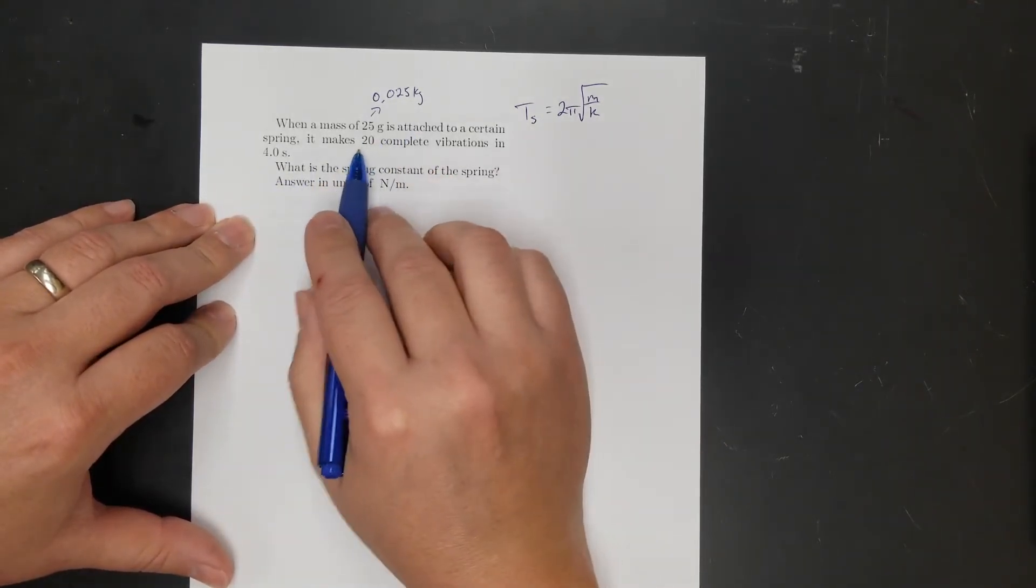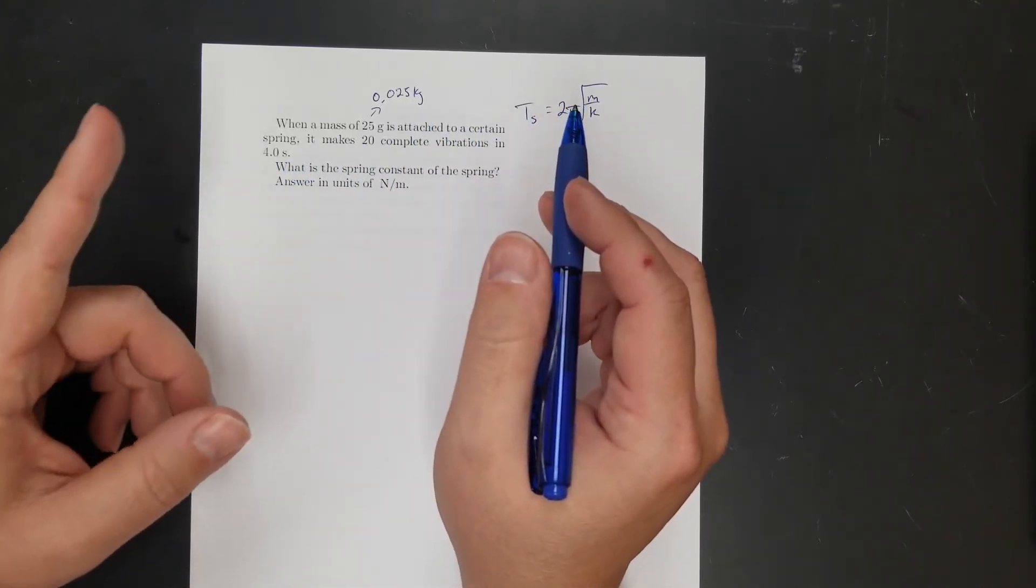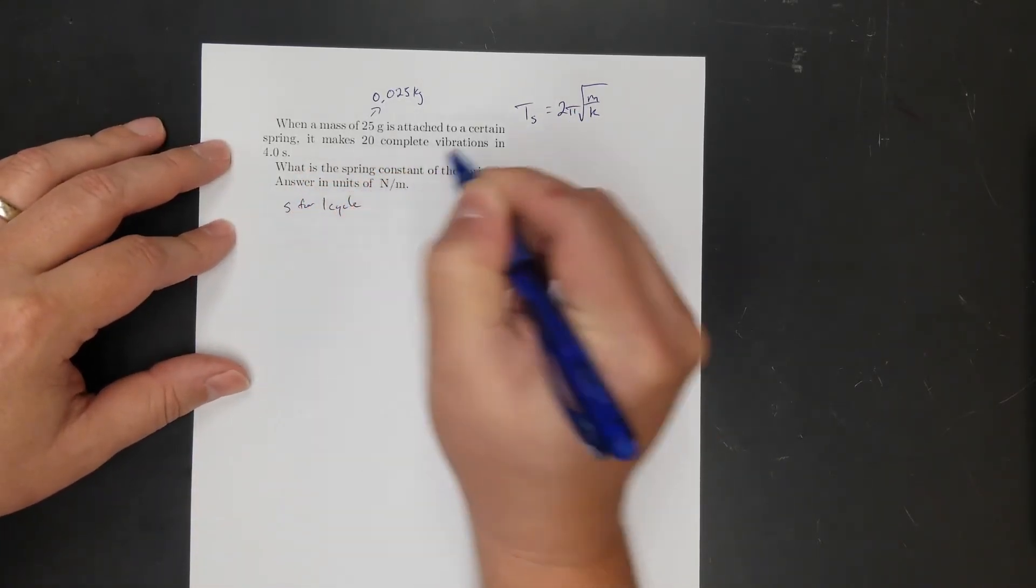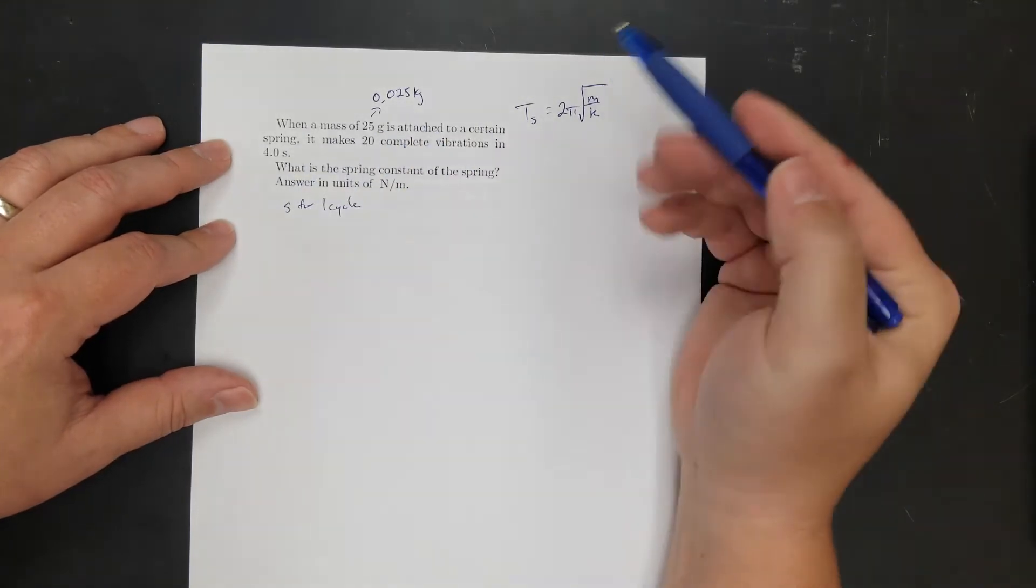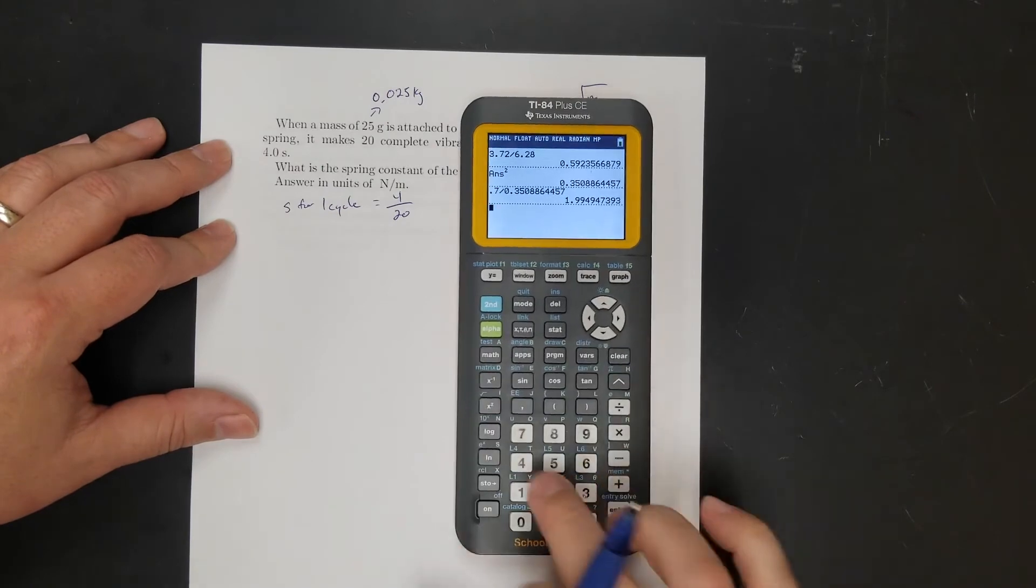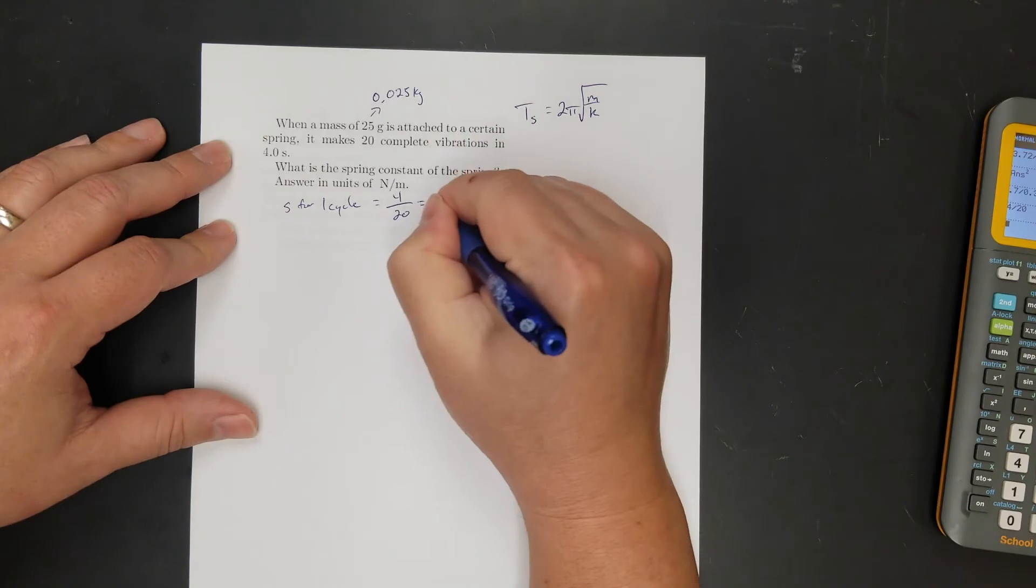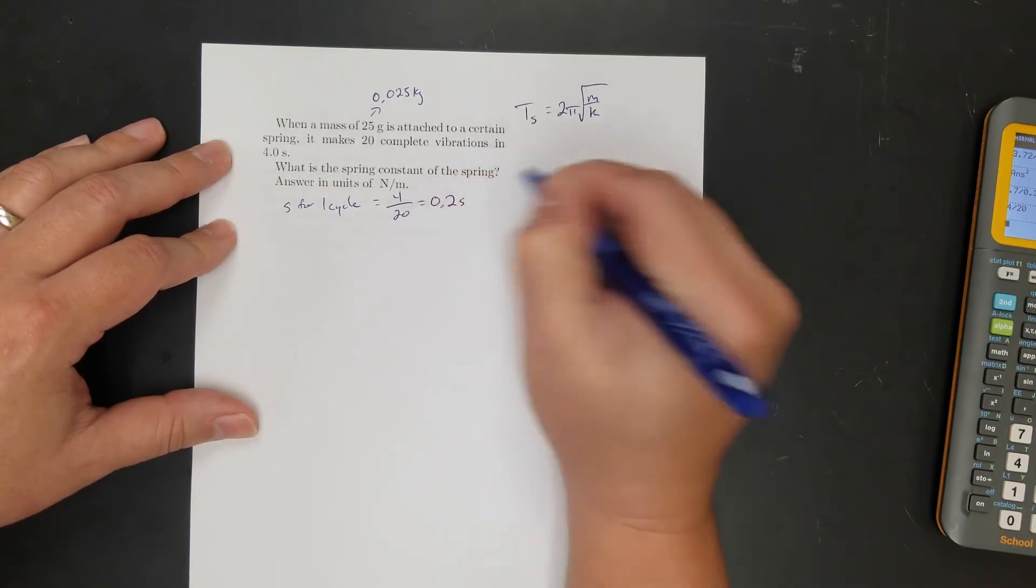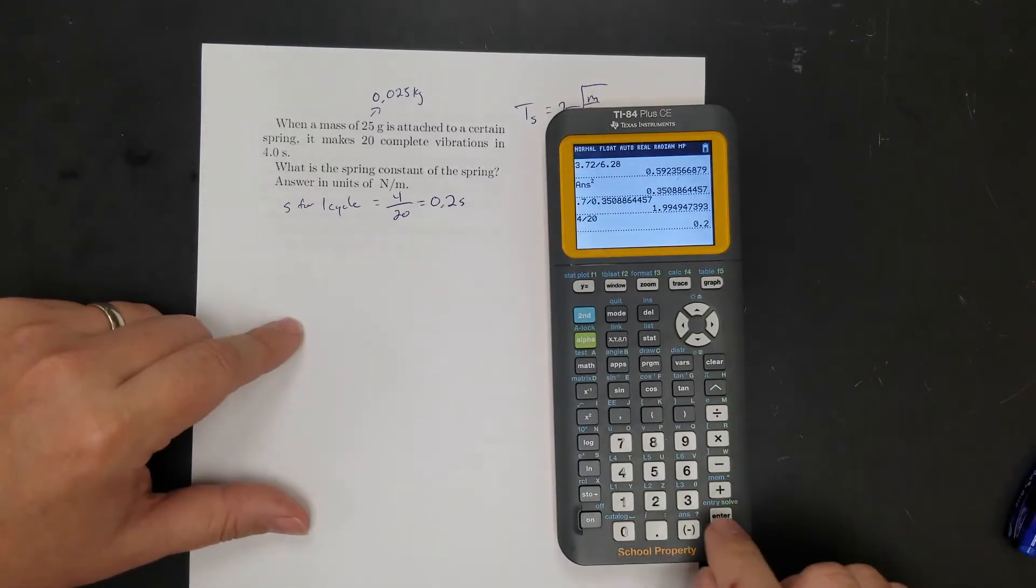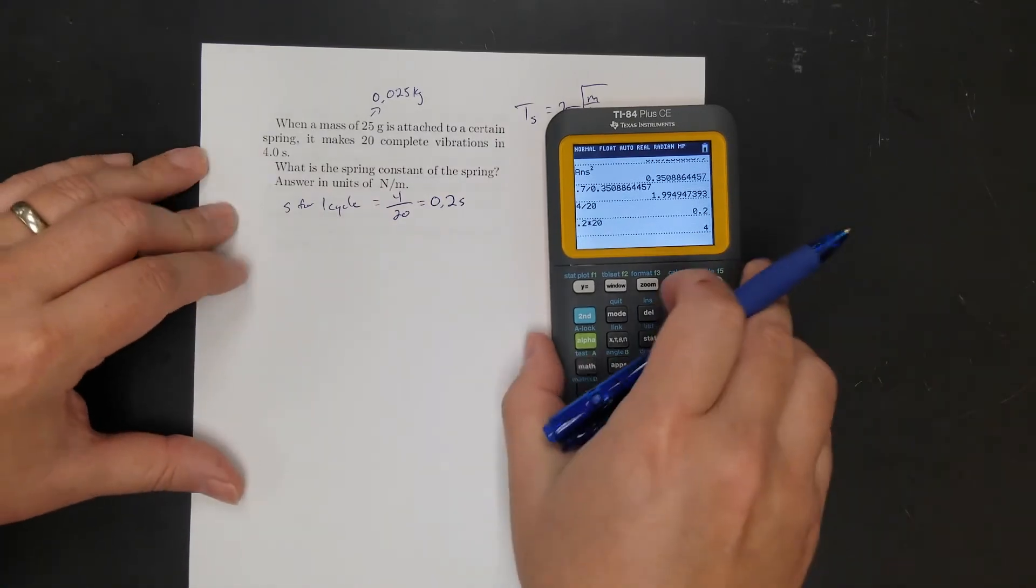And then same thing as last time, 20 vibrations in four seconds. So if it's 20 cycles in four seconds, I need to find how long it takes for one cycle. So seconds for one cycle. So again, I'm going to do seconds divided by cycles. So that's 4 over 20. So 4 over 20 is, I don't know why I'm using a calculator. It's going to be 20%. 4 over 20 is 0.2. 0.2 seconds. Okay, so again, let's check. If it takes 0.2 seconds for one cycle, if I do 0.2 times 20, that gives me four seconds.